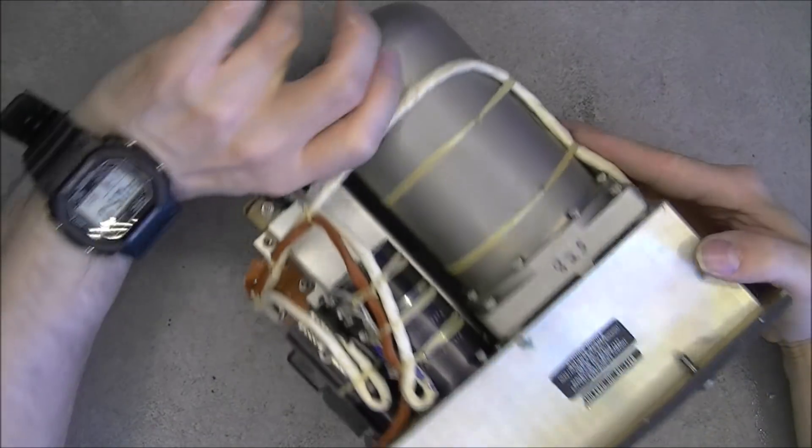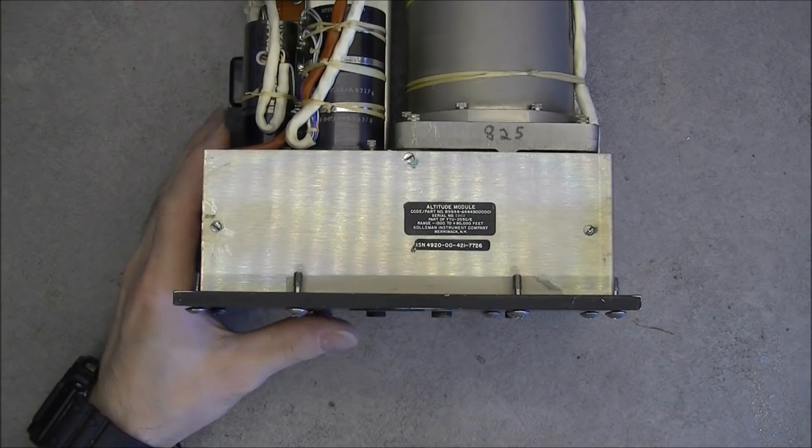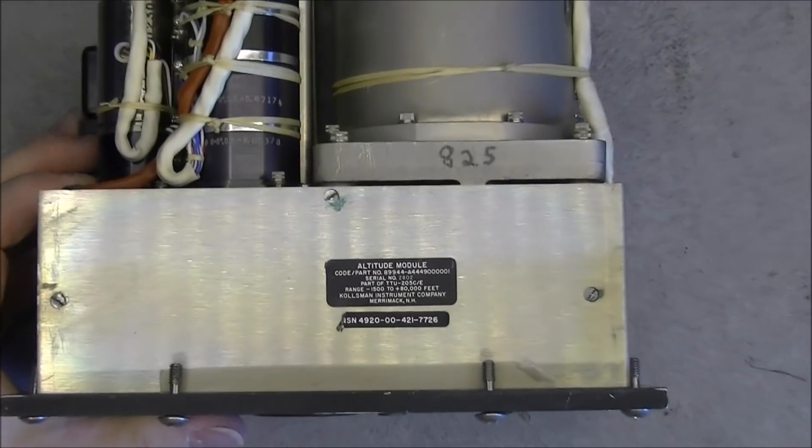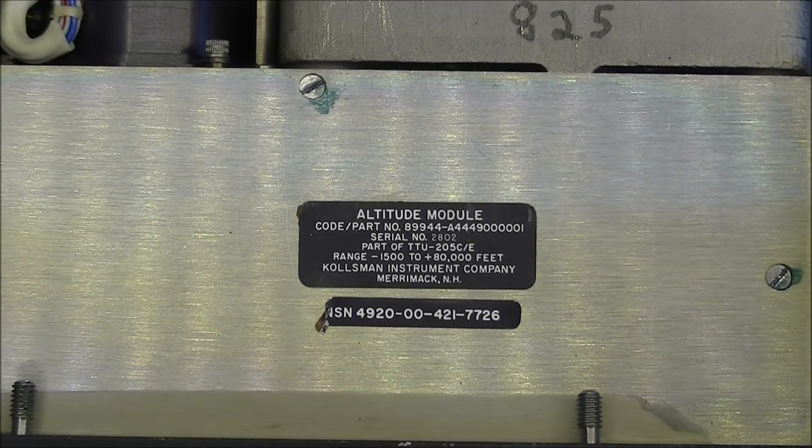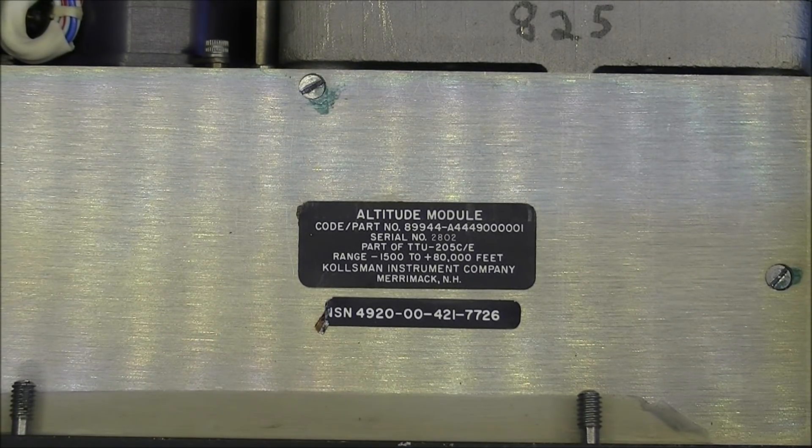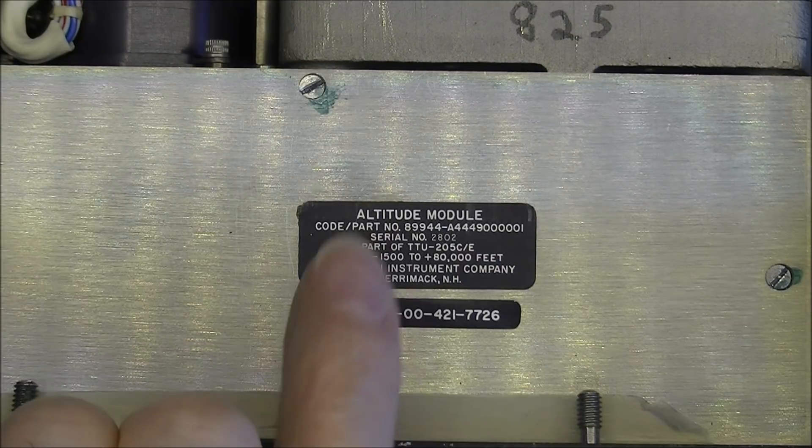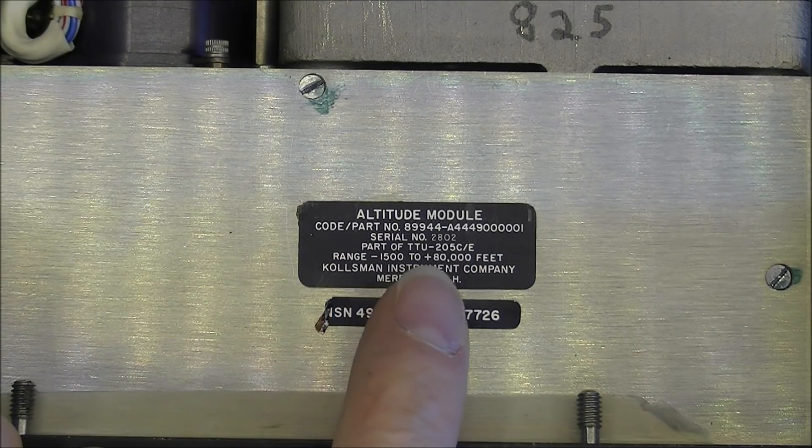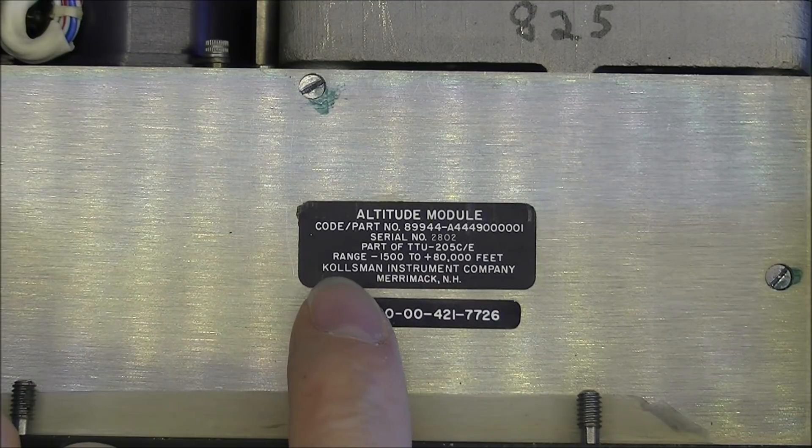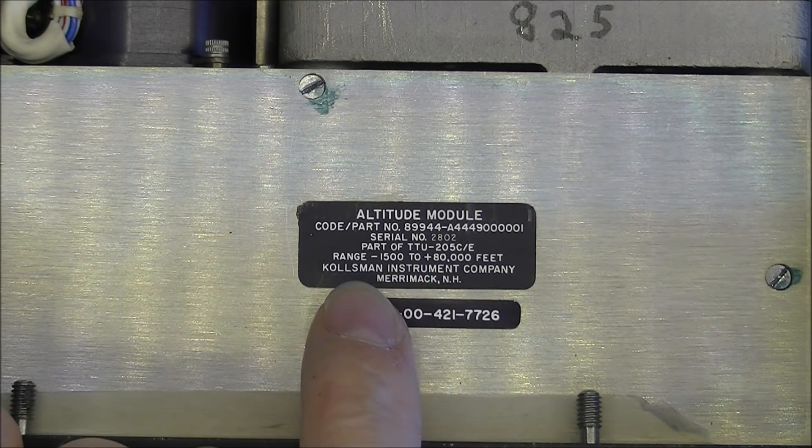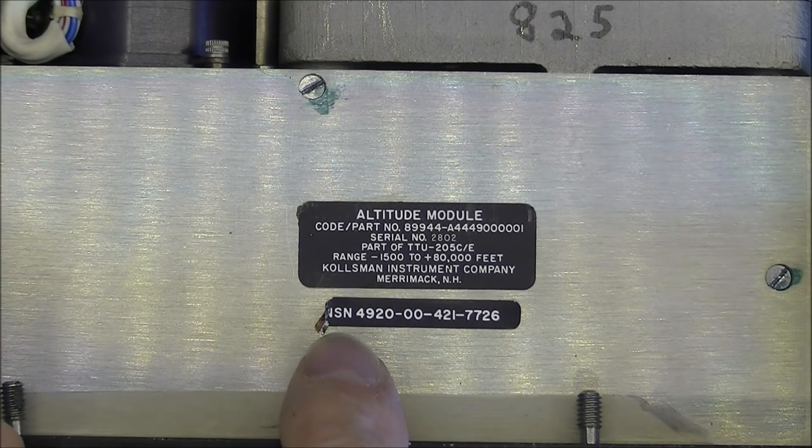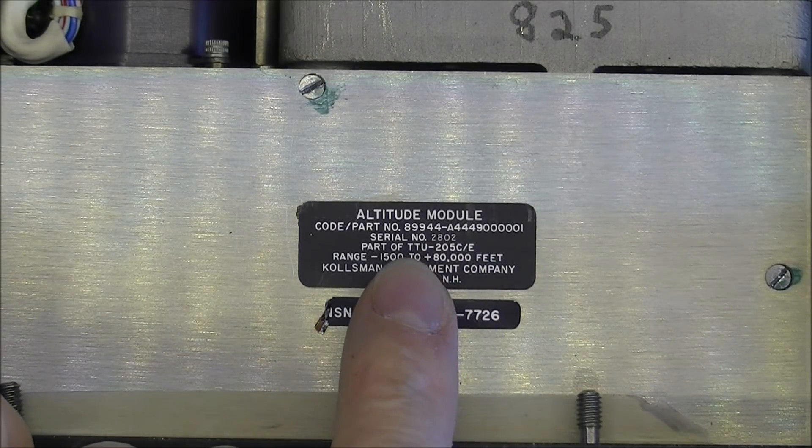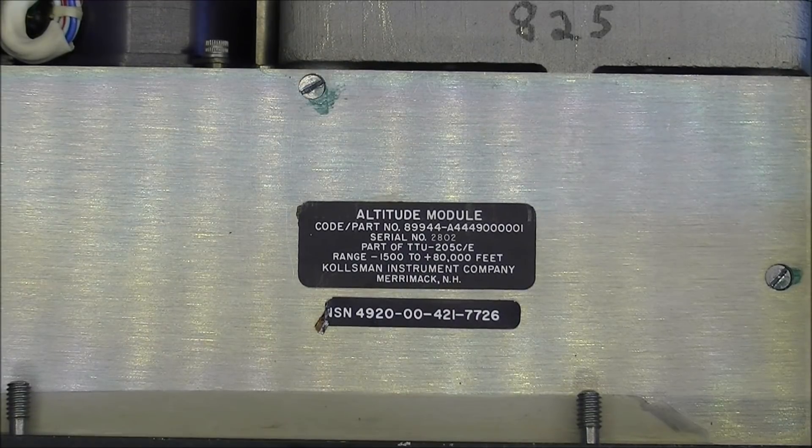So can we find any information? Yes. Here. So what does it say? Altitude module, serial number 2802, part of TTU-205CE. Cosman Instruments Company. And NSN number. So what is TTU-205CE?